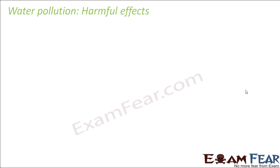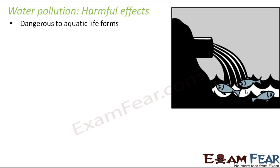One harmful effect is that polluted water is dangerous to aquatic life forms. If the water in a pond becomes poisonous and contains harmful chemicals, the animals living in water — like fishes, dolphins, crabs, etc. — which completely depend on water for survival will definitely die. So polluted water is extremely harmful for aquatic life forms.